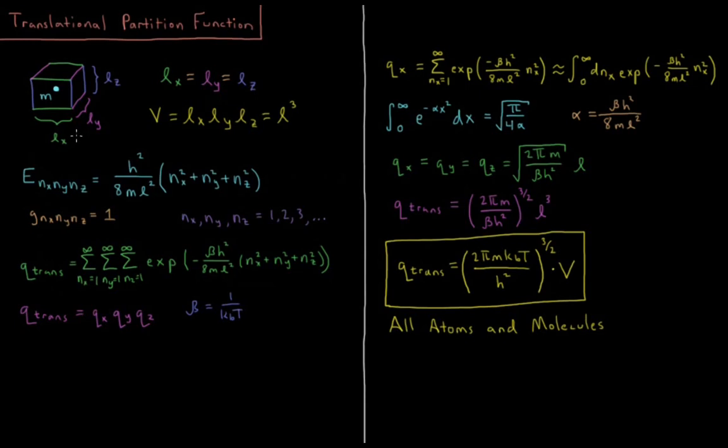So what are the energy levels of this system, of a particle inside a cube? From the three-dimensional particle-in-a-box model from quantum mechanics, the energy depends on three quantum numbers, nx, ny, and nz. That's equal to Planck's constant squared divided by 8 times the mass times the length of the box squared times the sum of these quantum numbers squared, nx squared plus ny squared plus nz squared. These quantum numbers are equal to integers starting at 1 going up to infinity, and the degeneracy of each energy level is 1.